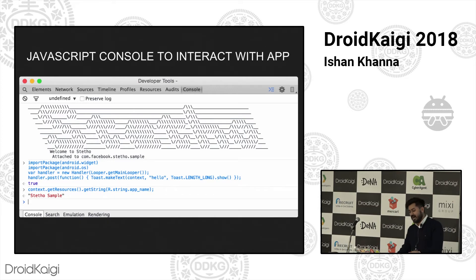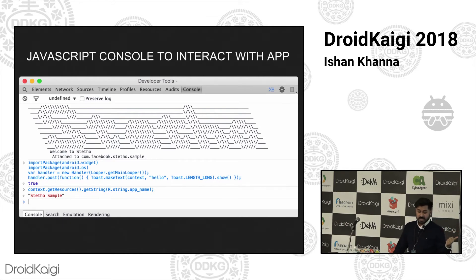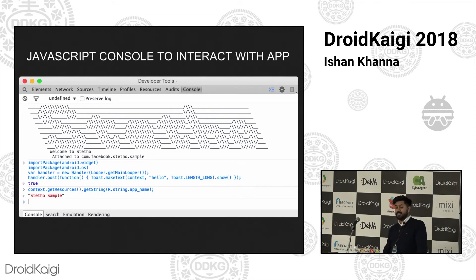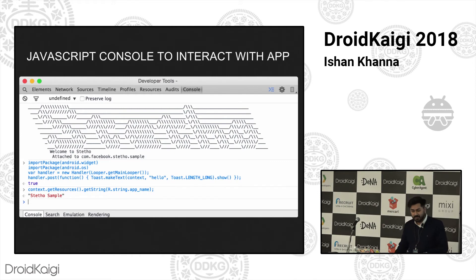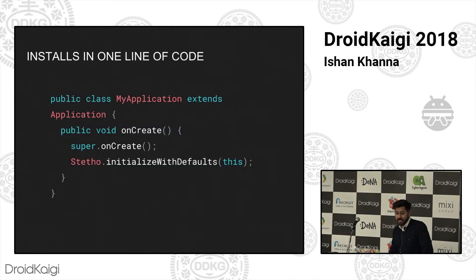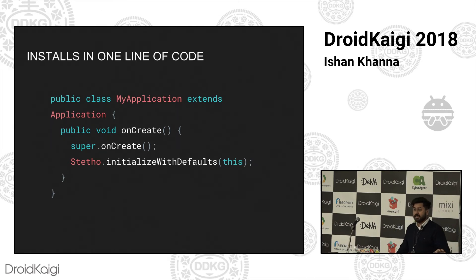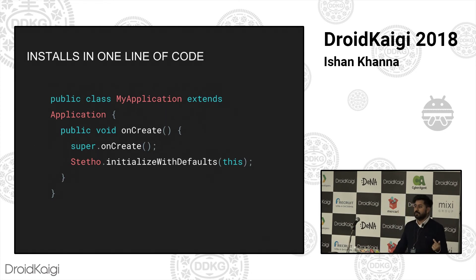Stetho also connects a JavaScript console which can execute code on your Android side. In the example shown, they print the name of a resource string called app_name right from the JavaScript console — pretty awesome. You don't have to compile the app again, you don't have to go through the Gradle madness. It installs in one line of code — just integrate the Stetho library, put it in your build.gradle, add this line, and it integrates almost everything apart from the network interceptors, for which you need another line of code available in the documentation.